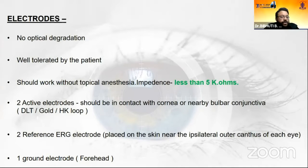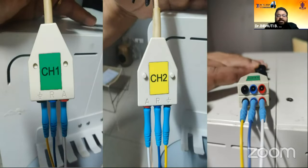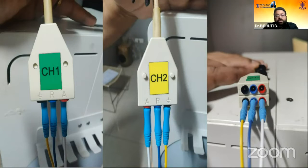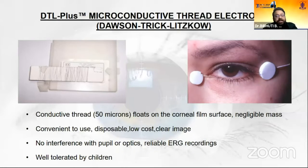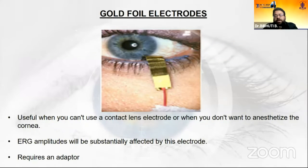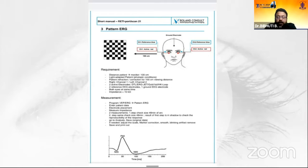Two active electrodes, two reference electrodes, and one ground electrode are required. The socket for wire insertion toward the machine has two parts — Channel 1 by convention for the right eye, connecting the active electrode and the reference electrode from the outer canthus. The electrode commonly used for pattern ERG is shown here, and this is how it is placed. Gold foil electrodes can also be used alternatively.